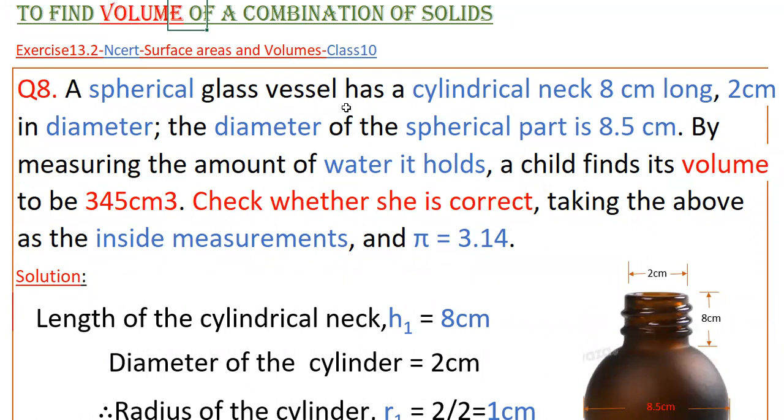A spherical glass vessel has a cylindrical neck 8 cm long, 2 cm in diameter. The diameter of the spherical part is 8.5 cm. By measuring the amount of water it holds, a child finds its volume to be 345 cm³. Check whether she is correct, taking the above as the inside measurements and π equals 3.14.